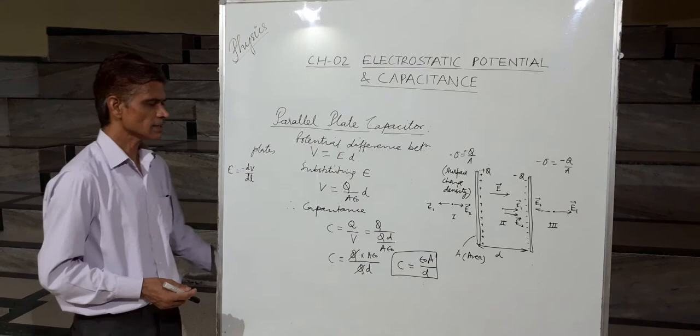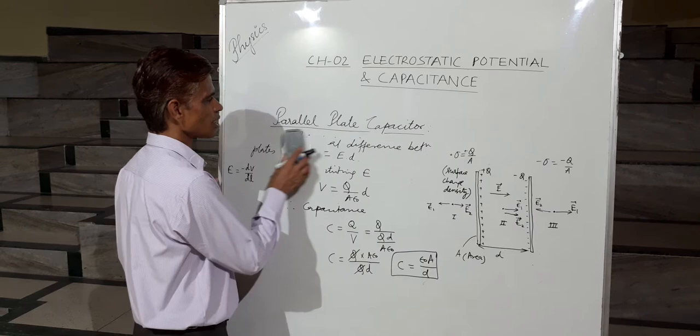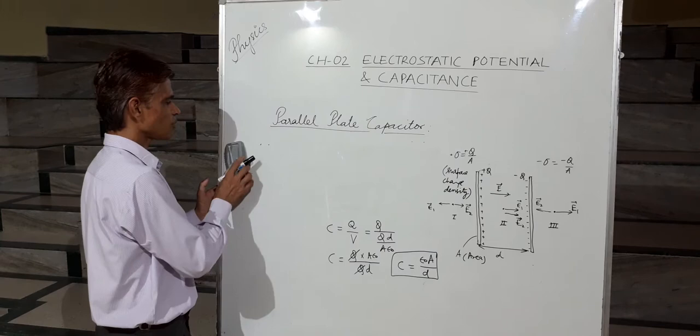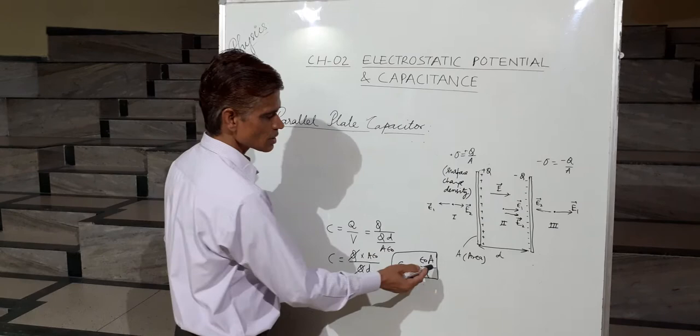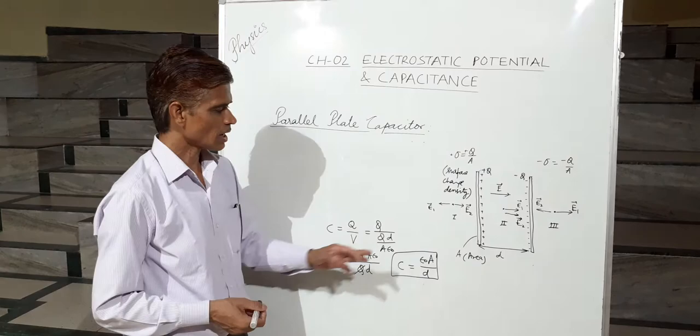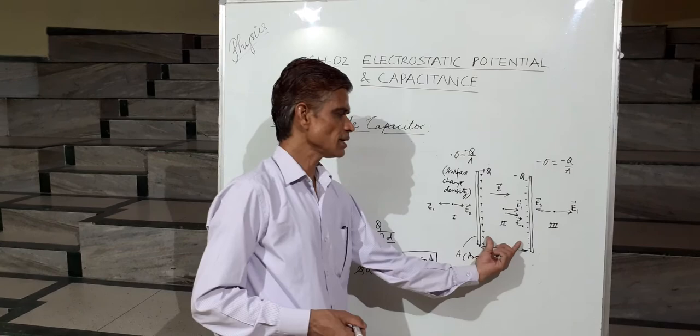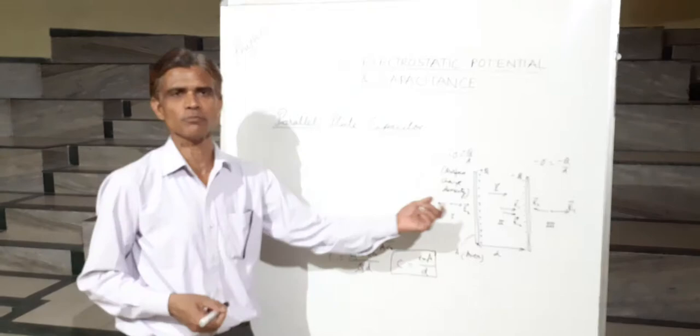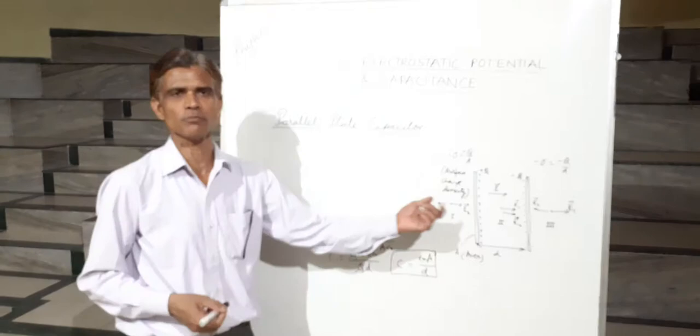As discussed earlier, the capacitance of a capacitor depends on the geometry — that is, the shape and size — of the capacitor. Here C depends on the area A of the plates and the separation d, which defines the geometry. ε₀ is the permittivity of vacuum. If we place a dielectric medium between the plates instead of vacuum, the capacitance will change, and that will be discussed in the next topic.